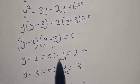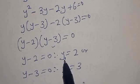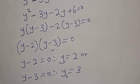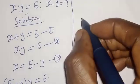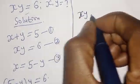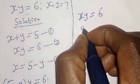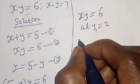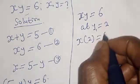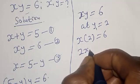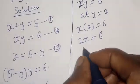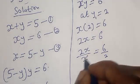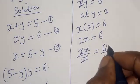Therefore y minus 3 equals 0 giving y equals 3, and y minus 2 equals 0 giving y equals 2. Let's call these y₁ equals 2 and y₂ equals 3. Now we want to find the value of s. We substitute y into equation 2. At y₁ equals 2, we have s times 2 equals 6, so 2s equals 6. Dividing both sides by 2 gives s equals 3.